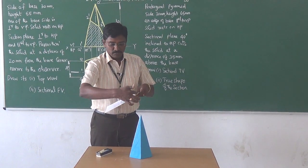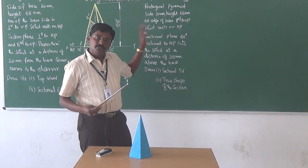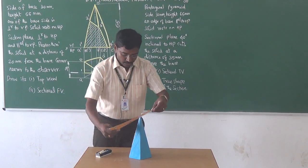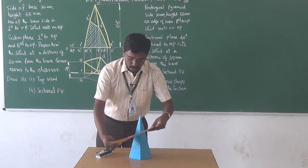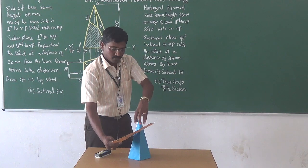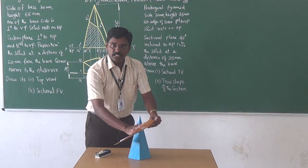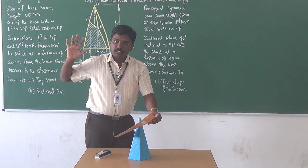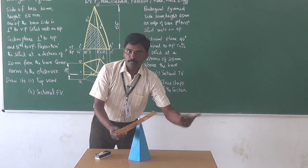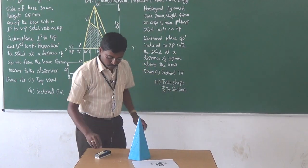The cutting plane is perpendicular to VP and inclined at 40 degrees to HP, so it appears as a line in the front view. We introduce the cutting plane as a line in the front view and project the top view. It passes 35mm above the base. The sectional top view requires removing the upper portion and looking from the top. Since the cutting plane is inclined, we need an auxiliary plane parallel to the cutting plane to view the true shape of the section.